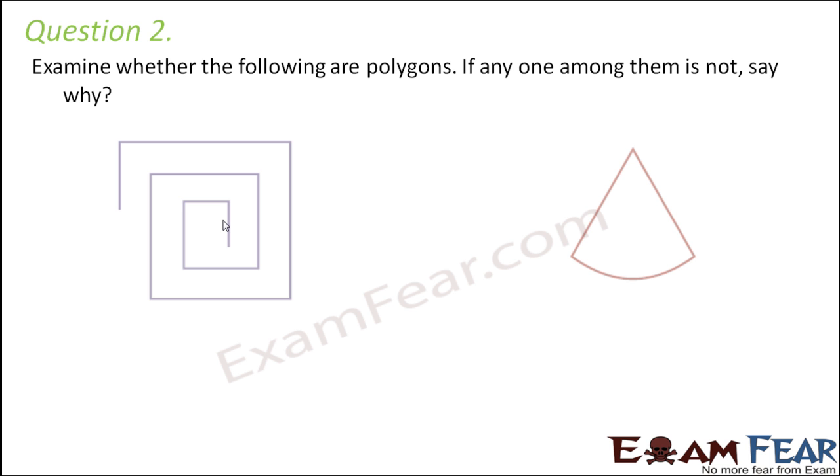Question number two: Examine whether the following are polygons. If any one among them is not, say why. So let's look at the first image. What are the three criteria to become a polygon? First, it should be a simple curve. Well, this is a simple curve because it doesn't cross itself. Second, it should be a closed curve. But do you think this is a closed curve? This is not a closed curve because you see it is open from here. So therefore this is not a polygon. Why not a polygon? Because this is an open curve and not a closed one.